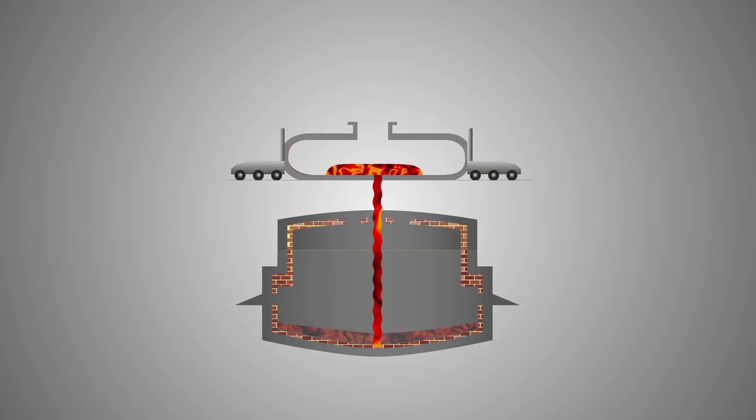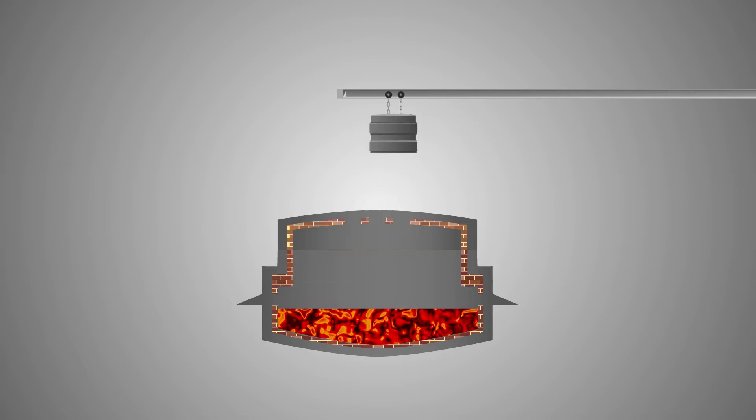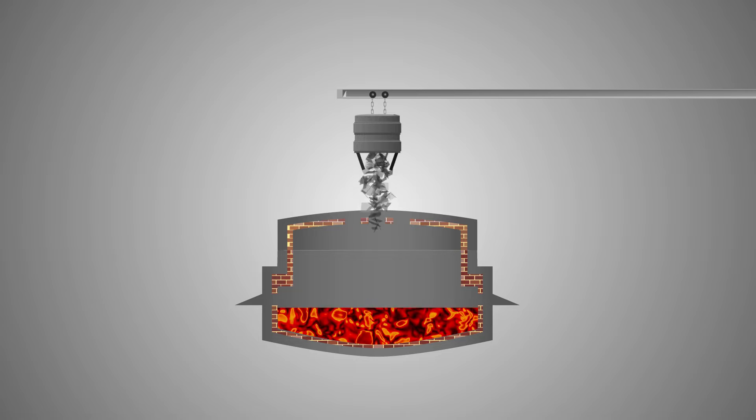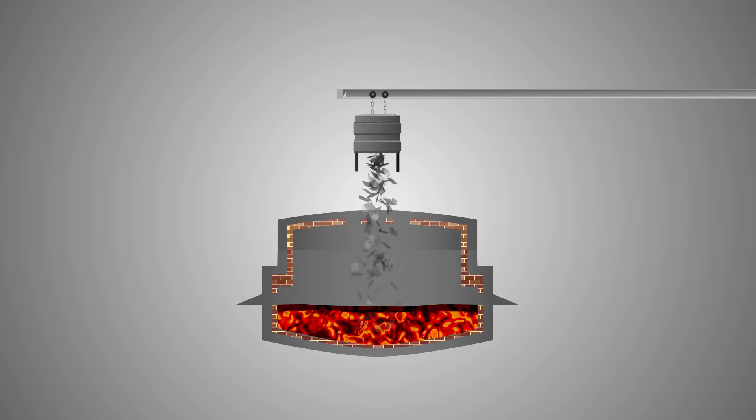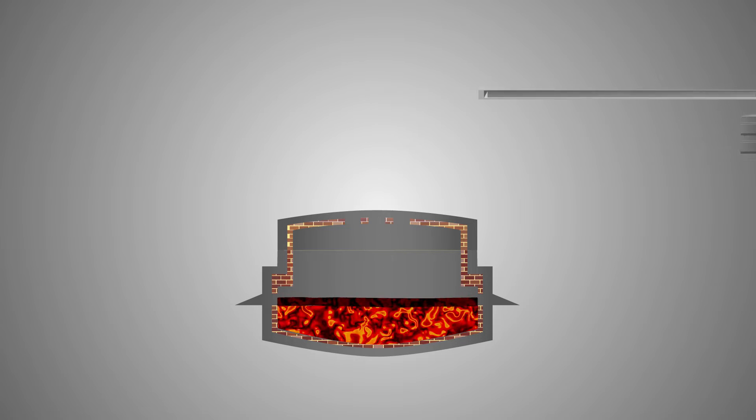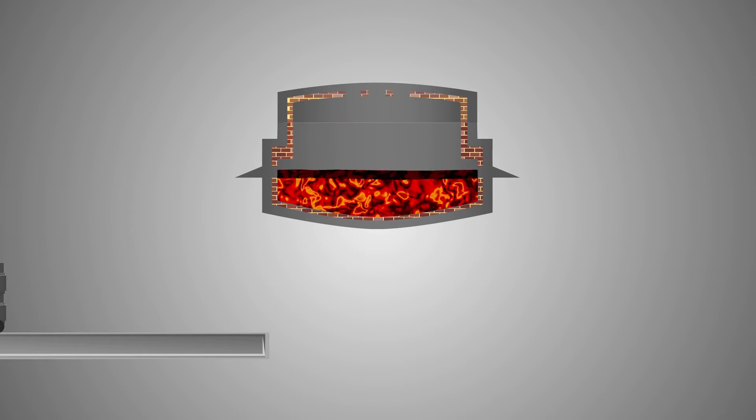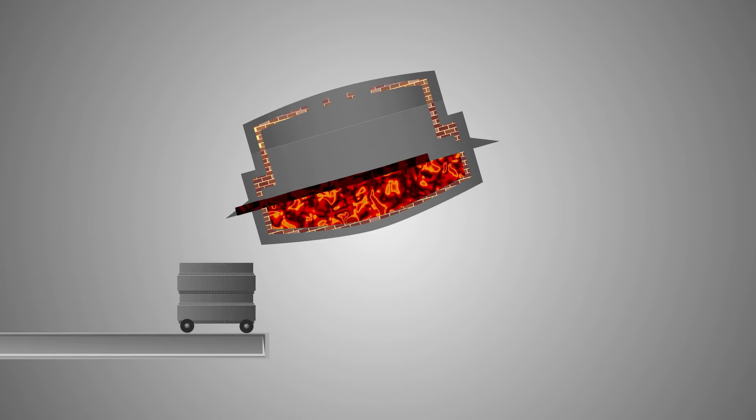The molten iron is usually pre-treated with magnesium to remove sulfur. The magnesium combines with sulfur in the molten iron to form magnesium sulfide slag, which floats on top of the molten iron. The magnesium sulfide slag is tapped off.